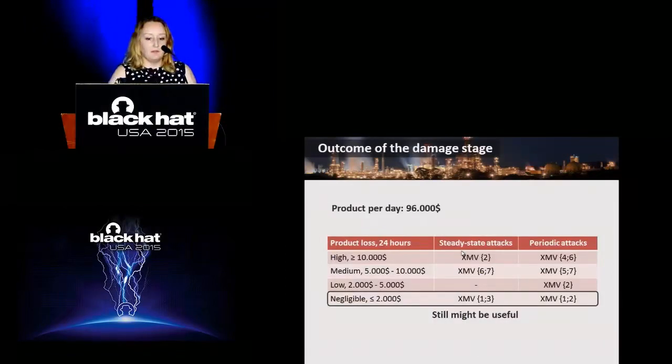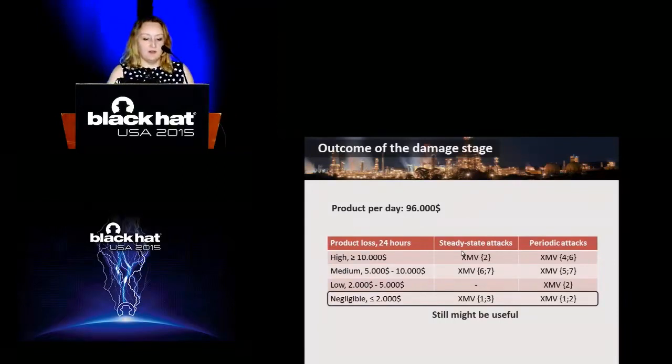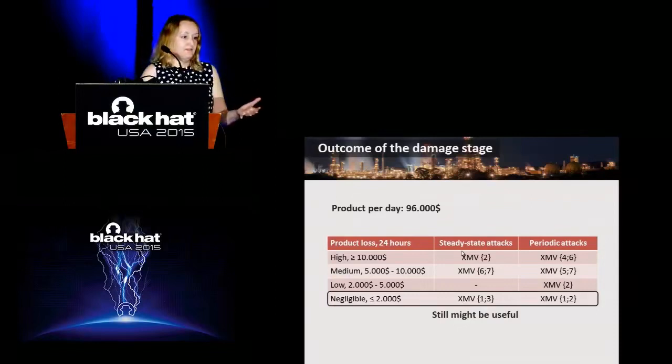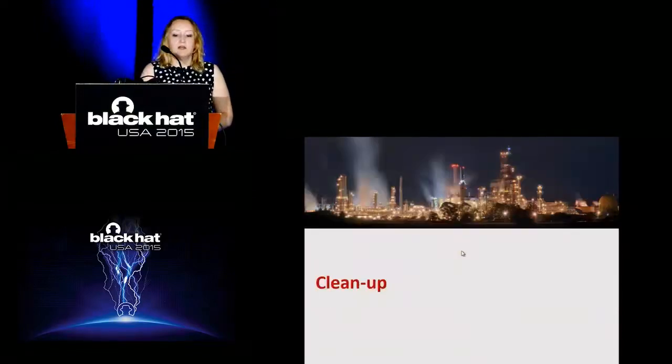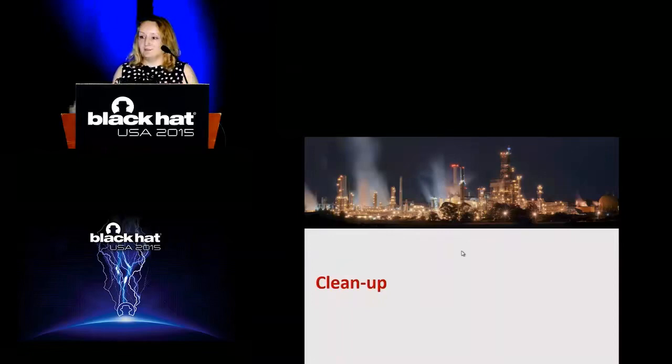The outcome of the damage stage is a portfolio of attacks which the attacker can play at the opportune time. We now know how to damage the process. We are still not done. We want to persist. It means we want to avoid attribution. How do we do it? In the IT world it's easy. In the physical world, if you change something, the effects are there. You can't simply lie and say it's not happening. The meaning of the cleanup stage is to misdirect, to avoid making the operators believe that something else is happening to the process and not cyber attacks.